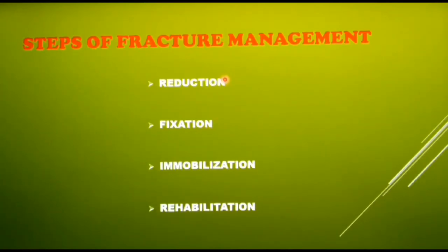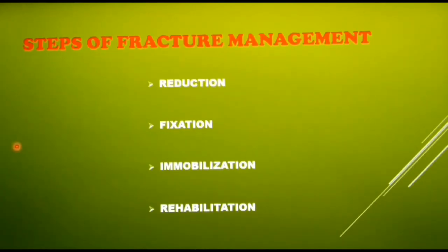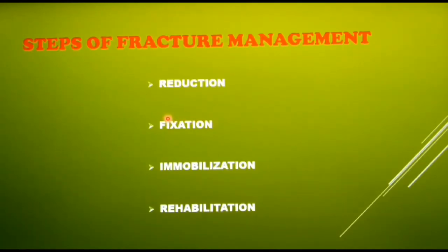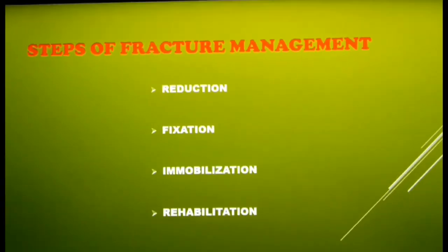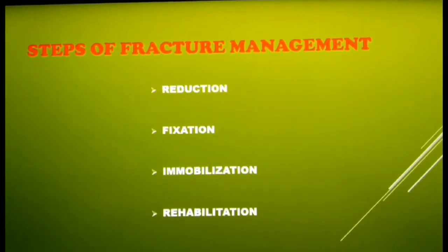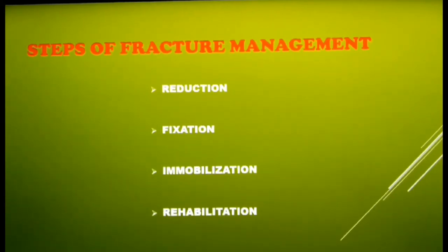Reduction means recreating the normal anatomy of the fractured bone by realigning the fracture fragments so they heal in their original positions. After reduction, the bone fragments are still potentially unstable, so fixation is performed — holding the fragments together using special implants like plates, screws, or wires. Immobilization refers to holding the bone in place to prevent movement as it heals, similar to wearing a cast in limb fractures. The final step is rehabilitation — restoring normal function through physiotherapy and exercises.